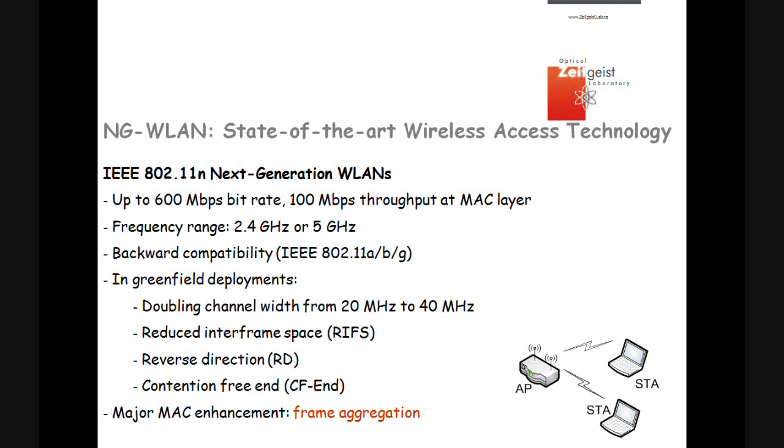As a state-of-the-art wireless access technology, we consider the emerging next-generation WLAN, which is able to provide up to 600 Mbps. Among various advanced techniques proposed in next-generation WLAN, it should be backward compatible with the legacy IEEE 802.11 WLANs. The major MAC enhancement of 802.11N is frame aggregation, which we consider in this work.